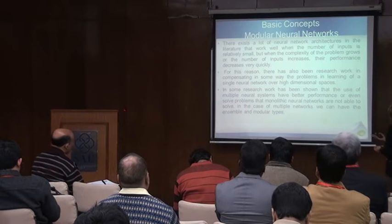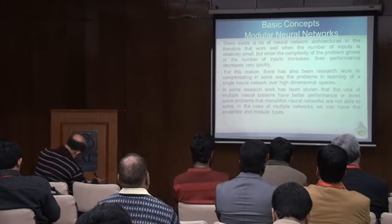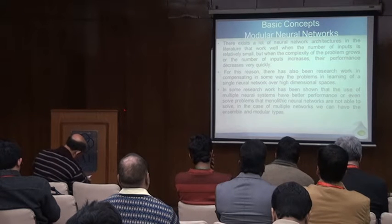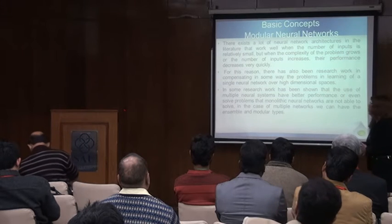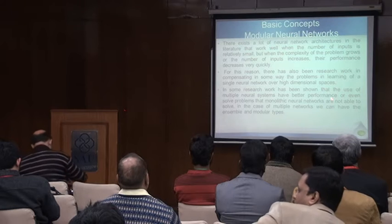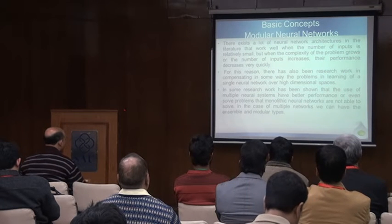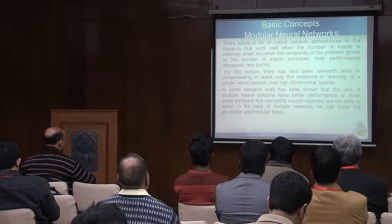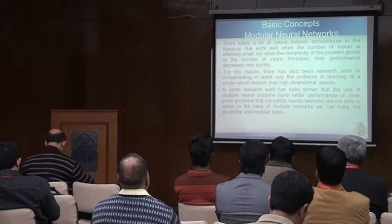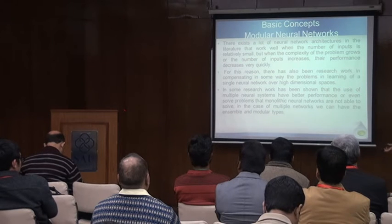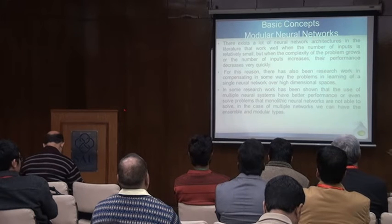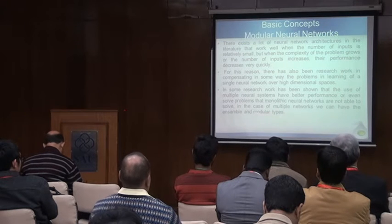The performance of one network decreases very quickly. And for this reason, there has been research working on this problem. We have a high-dimensional space that we need to solve, and with one network we cannot do it. Some research has shown that the use of multiple neural systems has better performance, or can even solve problems that monolithic — meaning only one — neural networks cannot solve at all.